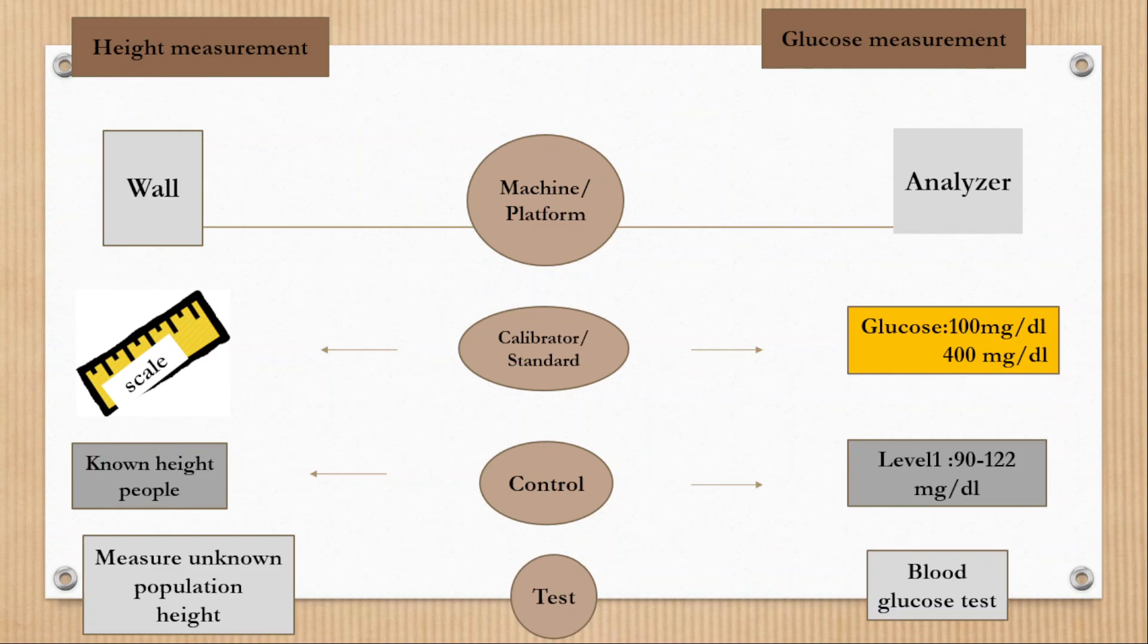Okay, finally in this section I will try to make you understand calibrator and control by comparing laboratory test with other activity. Here, two tasks - task one is height measurement of people and task two is blood glucose measurement. Now let's compare these two tasks to have an idea about calibration and control. So for these two tasks, first we need a machine, this machine or platform or site where we can work.